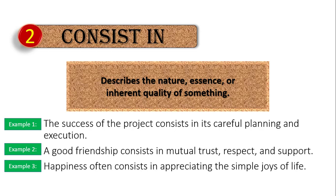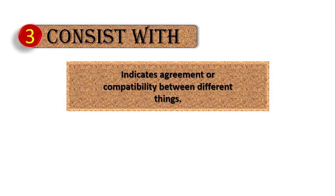So to summarize: use 'consist in' for qualities, and 'consist of' for physical elements or ingredients. Now, let's look at 'consist with.' We use 'consist with' when we are talking about two things and whether they are compatible with one another.